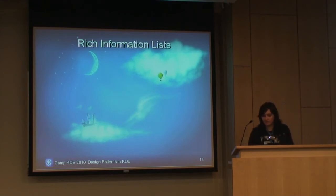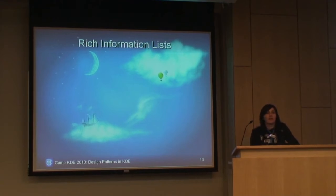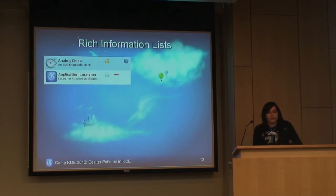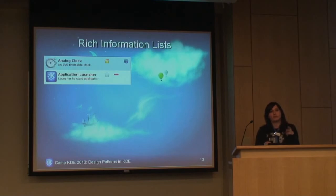Rich information lists is something we were working on in detail a couple years ago, but it faltered because it's a much more difficult problem than the KNS button. The KNS button basically had an icon, a button, and a label — the label was pretty easy to figure out. Rich information lists are lists of multiple pieces of data put together into one object. For example, in the Plasma Add Widgets dialog, you have an icon, a label, a description, an information button, and an action button — the little star with a minus.